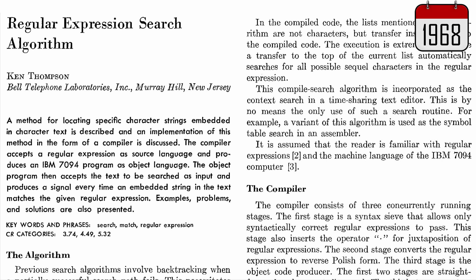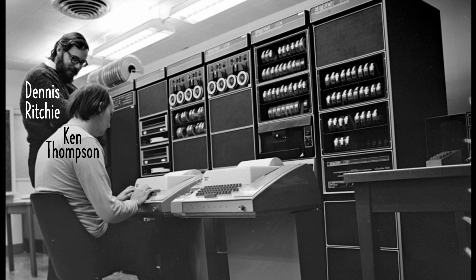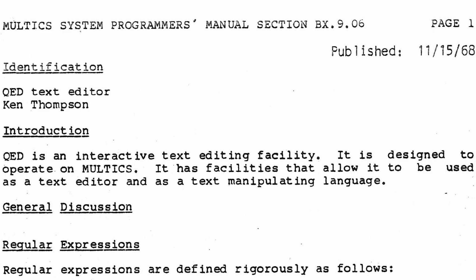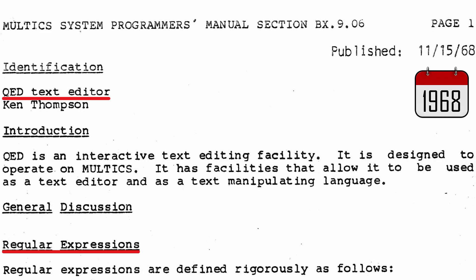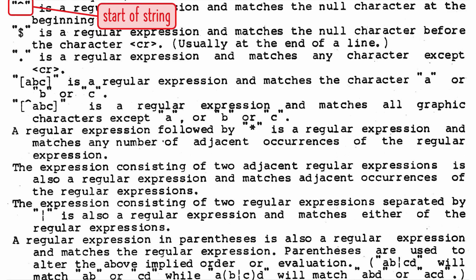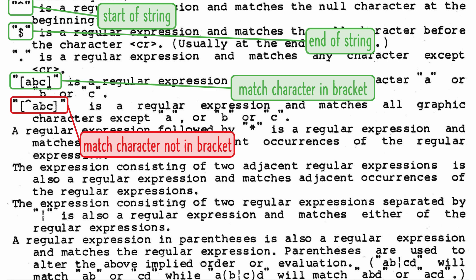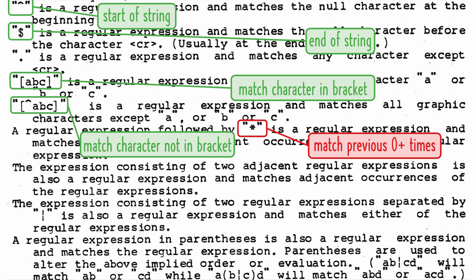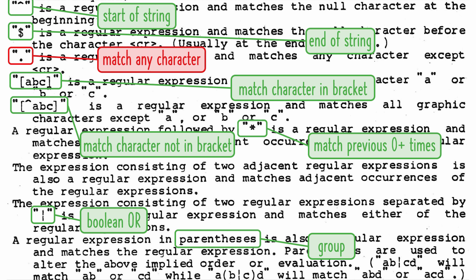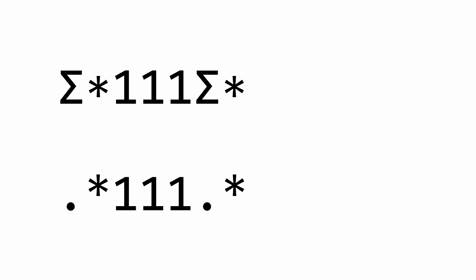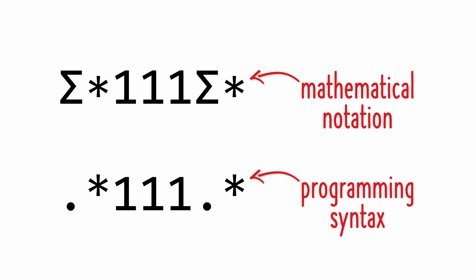Nearly two decades after Kleene's first publication on the subject, computer scientist Ken Thompson published a paper describing the first implementation of regular expressions in software. Thompson implemented regular expressions the year before he created Unix with Dennis Ritchie. Ken embedded his regular expression algorithm into a text editor. Back then, he used symbols that we still use today: the caret for the starting position, dollar sign for the ending position, matching a single character within brackets, matching a single character not within brackets. The asterisk, derived from Kleene's star, matches the previous character zero or more times. The vertical bar for a Boolean OR, and parentheses to define a group. Instead of using sigma, he used the dot as a wildcard to match any character. So his implementation of sigma star 1 1 1 sigma star was dot star 1 1 1 dot star.